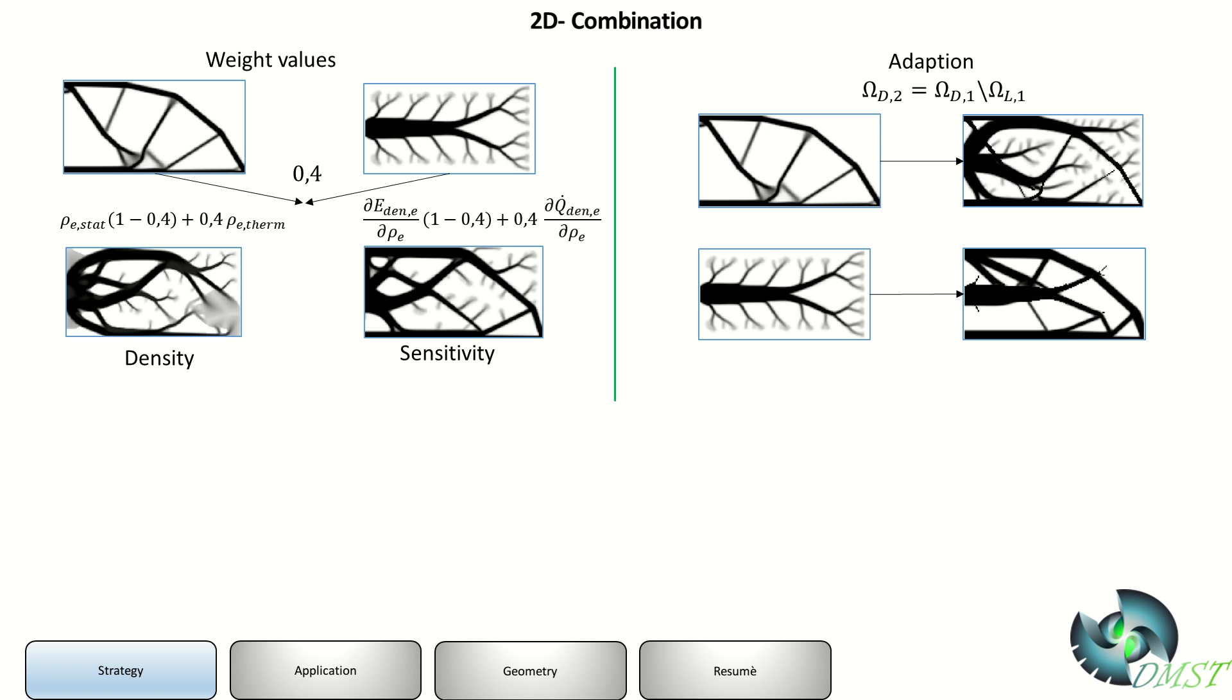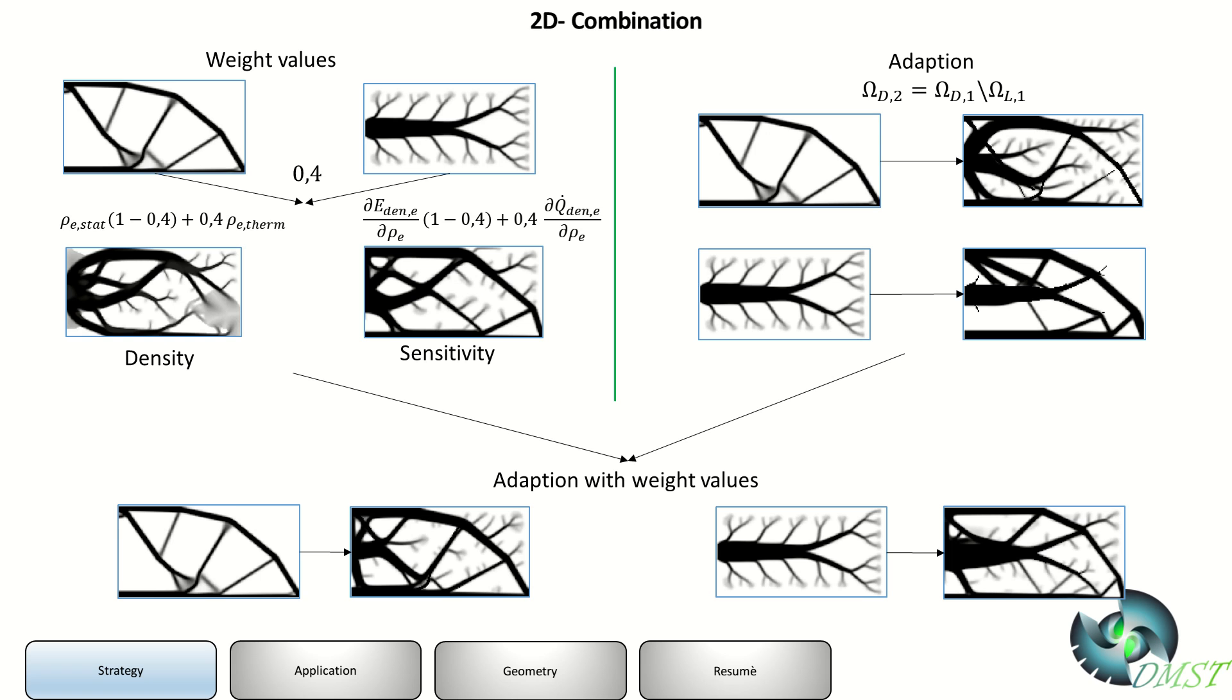Sometimes you need to do it again and again and change a little bit the values, and then you get a better result. The last one is adaption with weight values. This is maybe the best one with adaption. We don't adapt only the thermal or the static function, we adapt a mixed function, and then we get a really quite nice result. In the end we need to check all results and choose the best one.